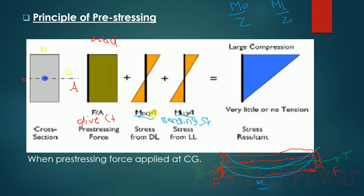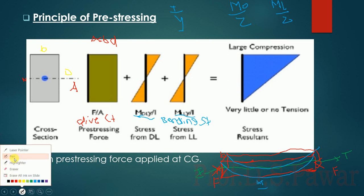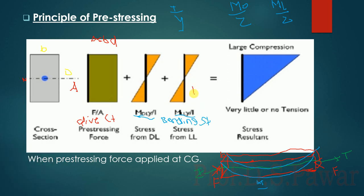Z is the section modulus, equal to I by Y. They have taken Y on the upward side and written the formula with M_D times Y divided by I. The same thing they have done for live load also.